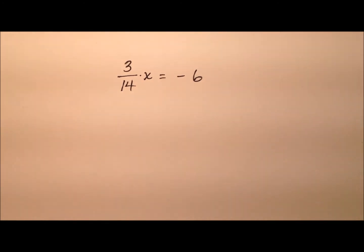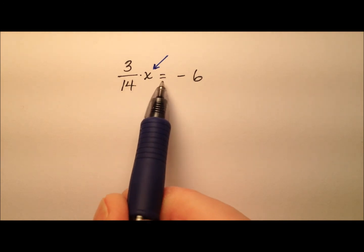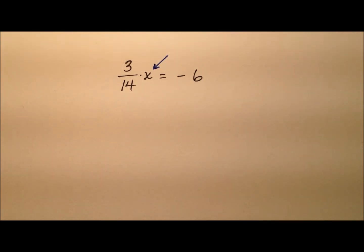So our effort here is to go ahead and isolate this variable x on one side of the equation all by itself, and so when we do so we'll know that x equals, and then we'll have the number that it equals.